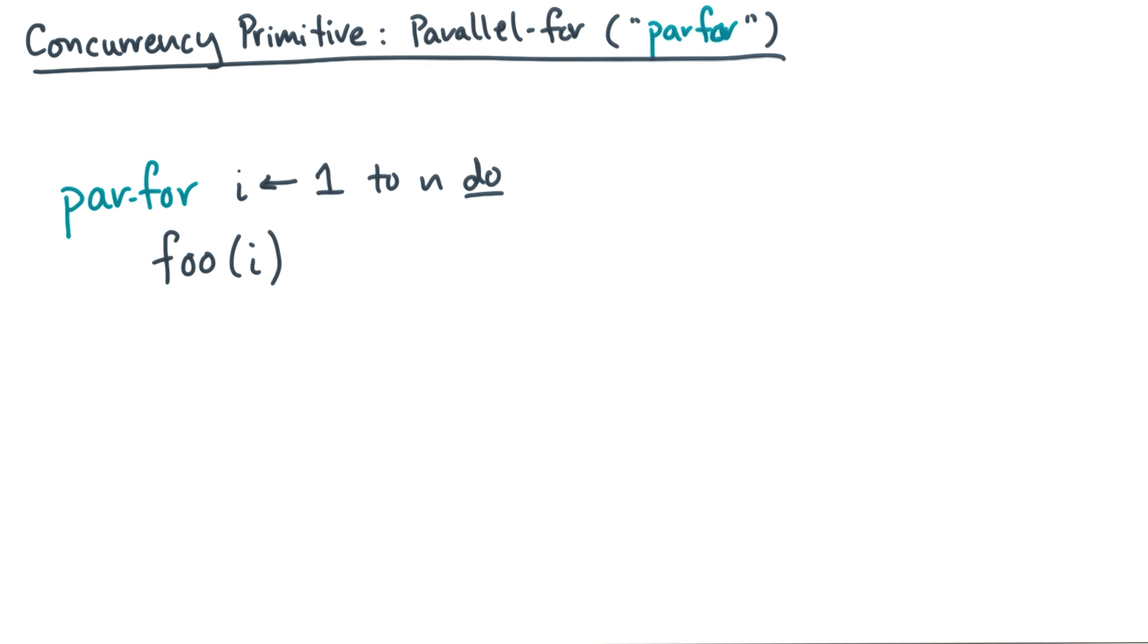Here's another handy concurrency primitive. It's a parallel for loop, or par-for for short.